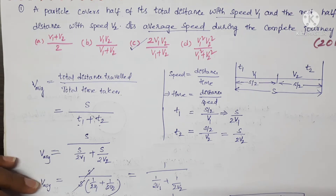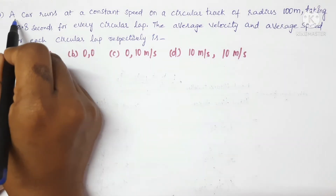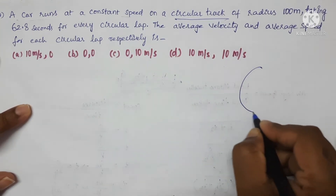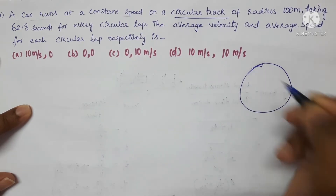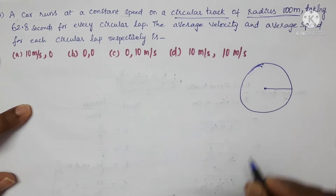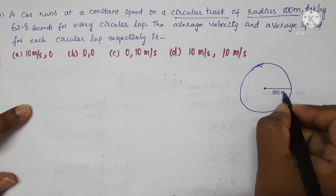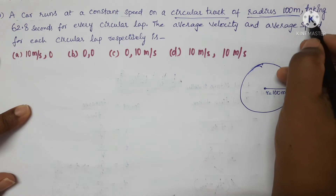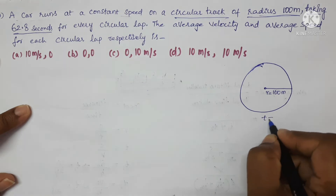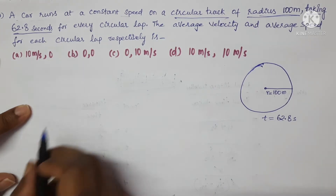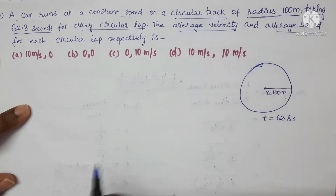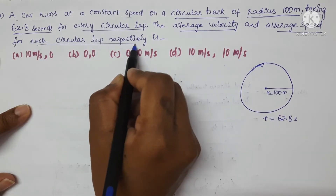Let us move on to the second question. A car runs at a constant speed on a circular track. This is a circular track of radius 100 meters — the radius is given as 100 meters. It takes 62.8 seconds for each circular lap.